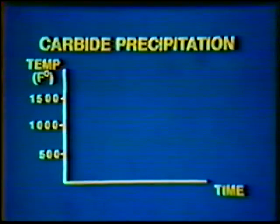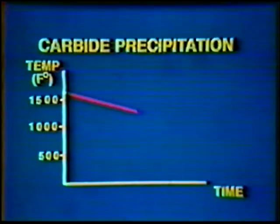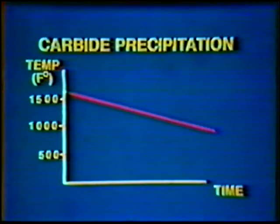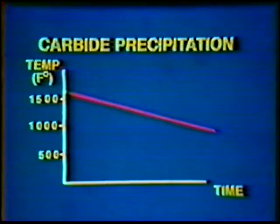One problem which can occur when welding austenitic stainless steels is carbide precipitation. This occurs when the steel is held at 900 to 1600 degrees Fahrenheit for prolonged periods of time. In this situation, carbon combines with chromium to form chromium carbides, which reduce the corrosion-resistant properties of stainless steels.